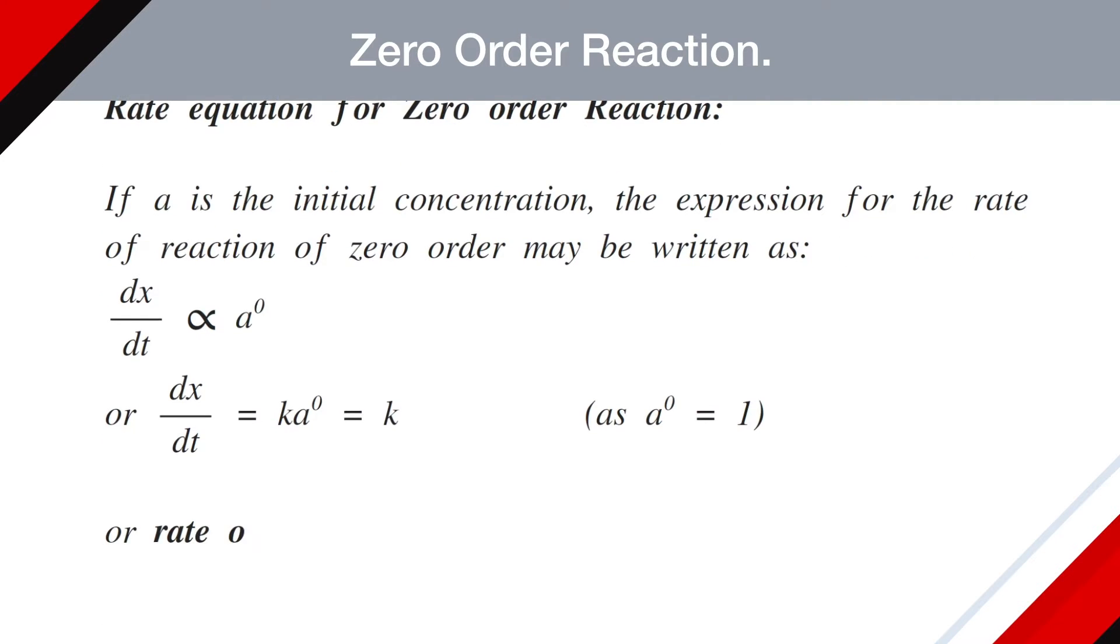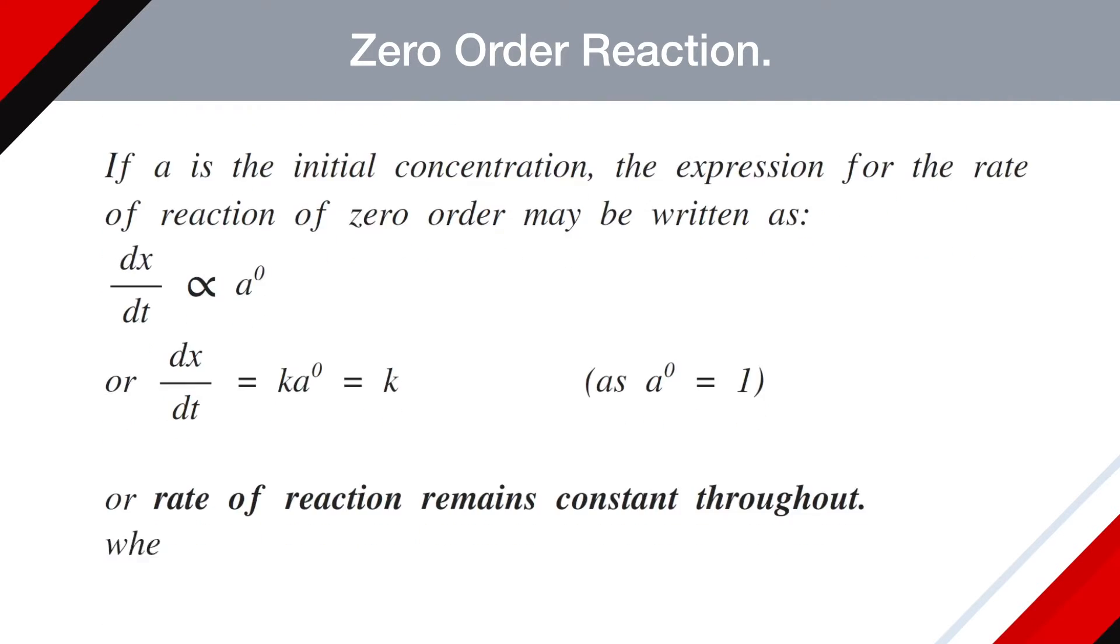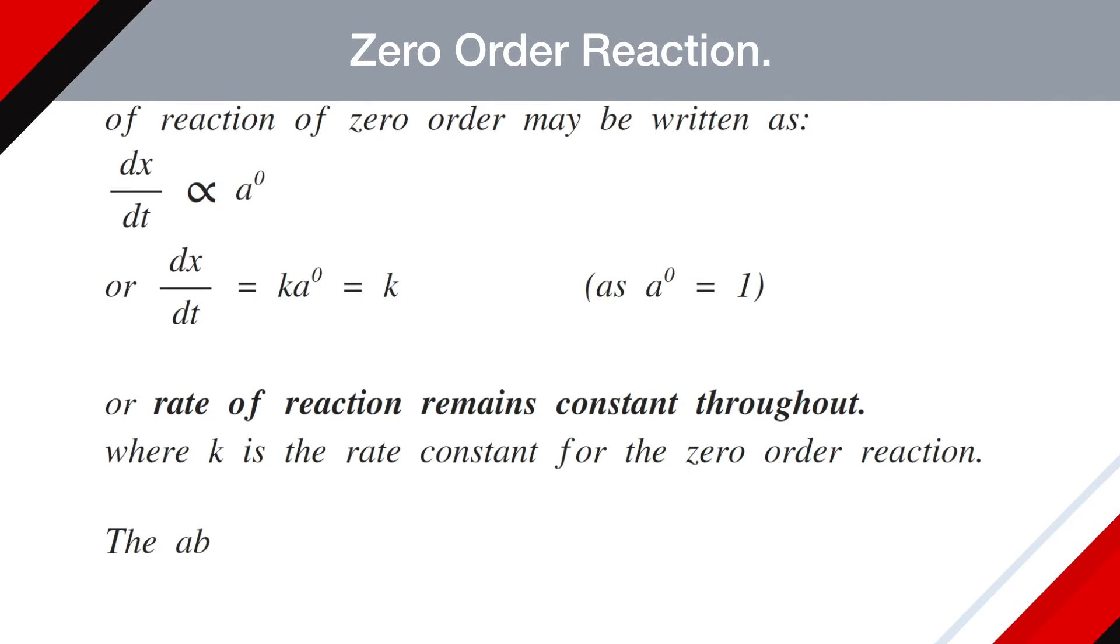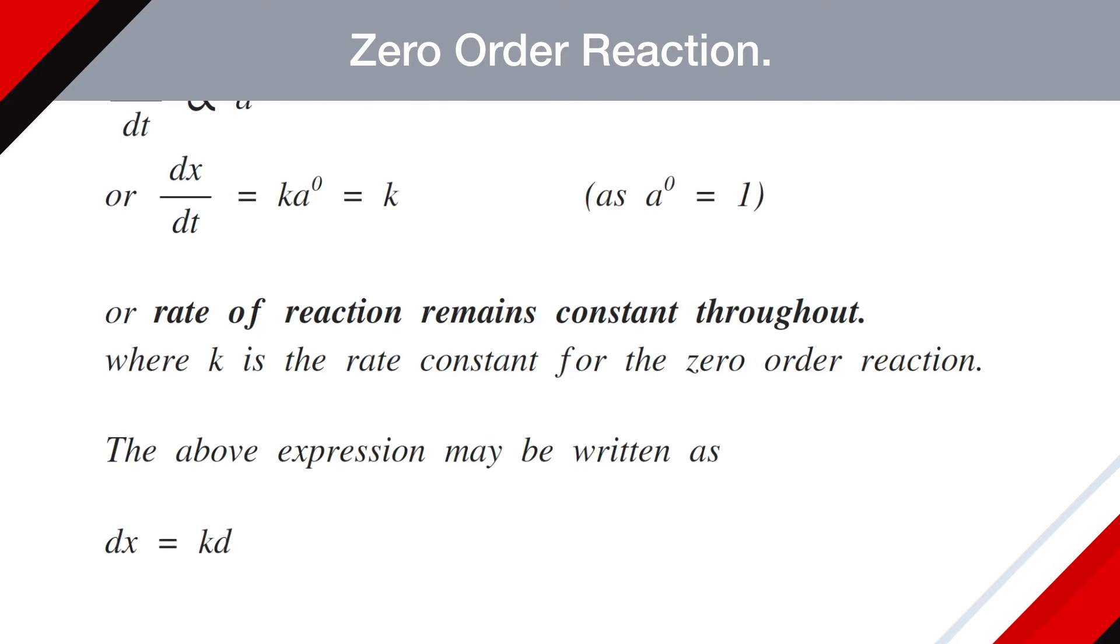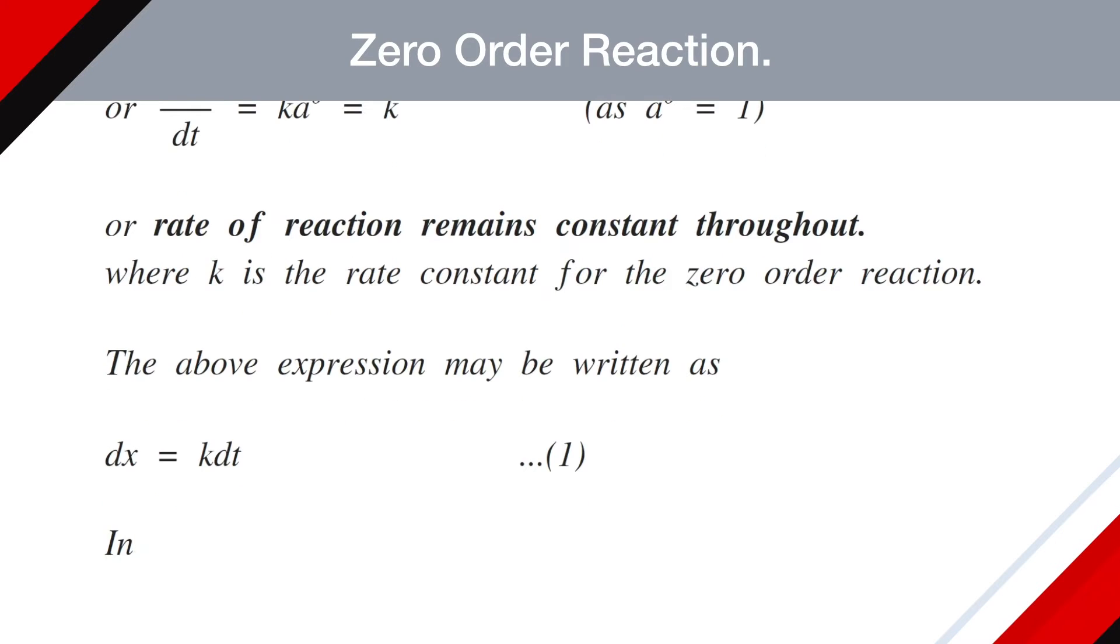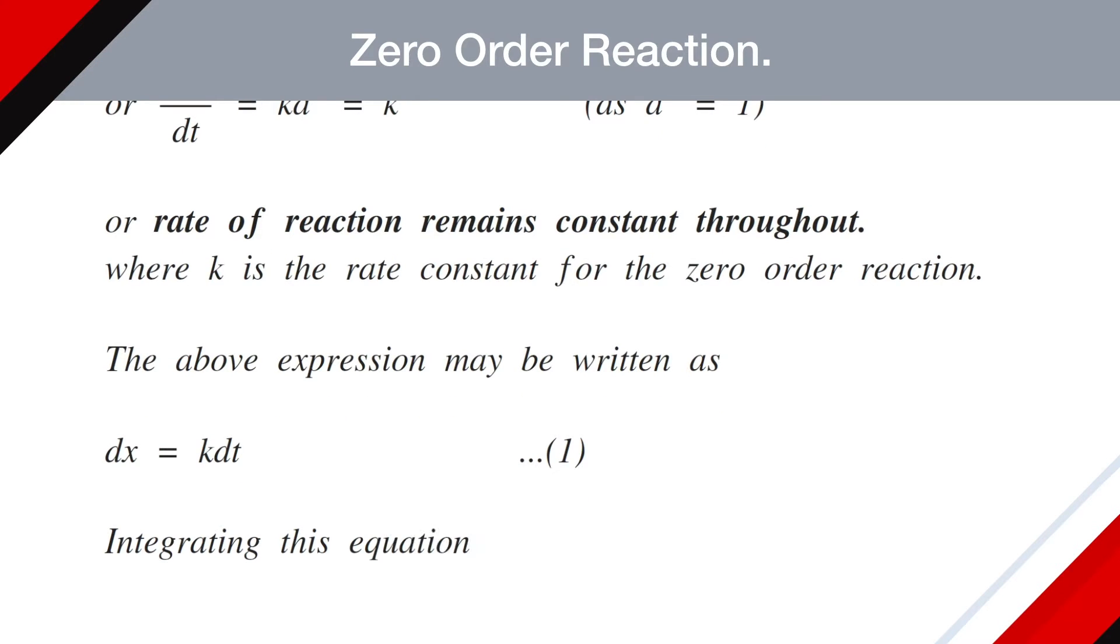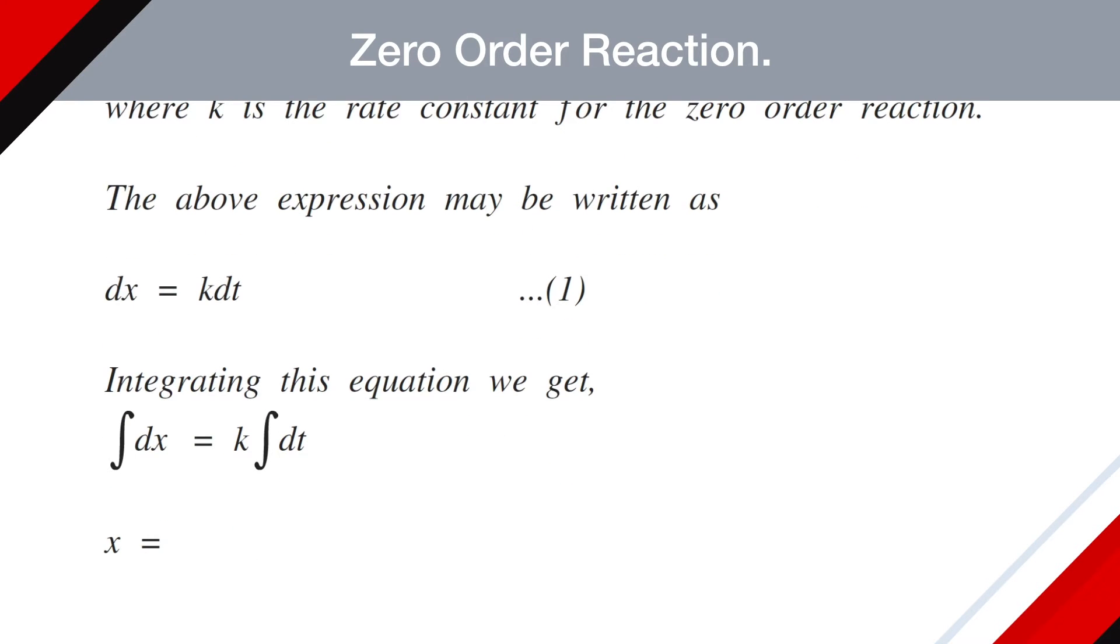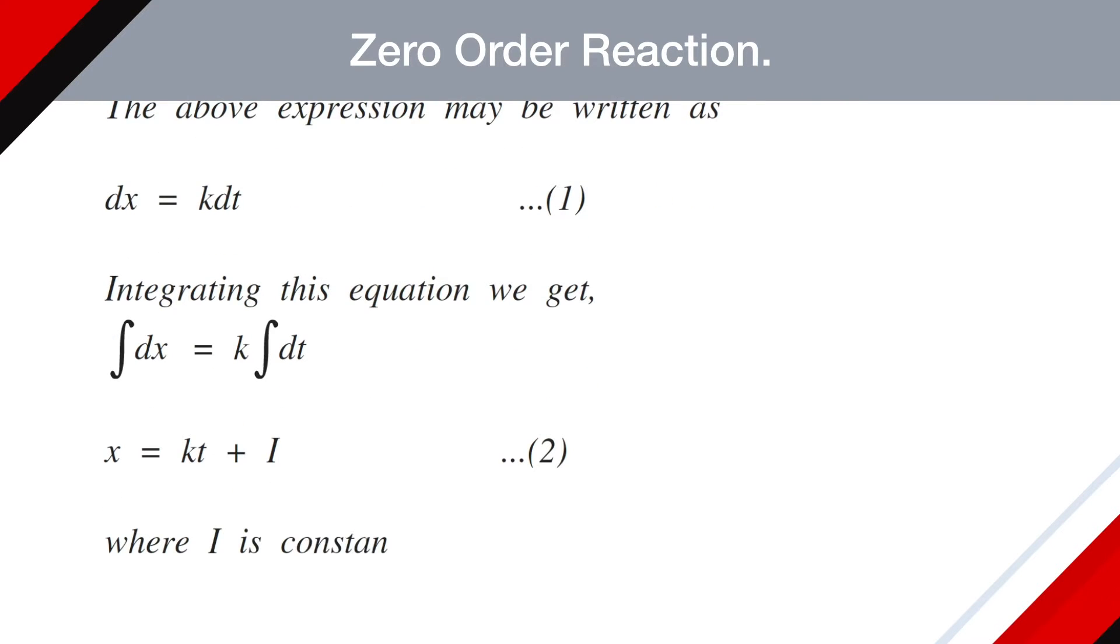The rate of reaction remains constant throughout the reaction where K is the rate constant for the zero order reaction. The above expression may be written as dx equals K dt. This is equation number one. On integrating this equation, we get integration of dx equals K integration of dt which becomes X equals KT plus I. This is equation number two where I is constant of integration.